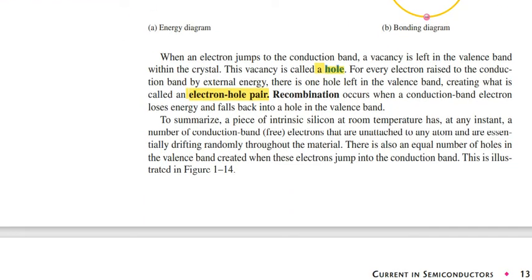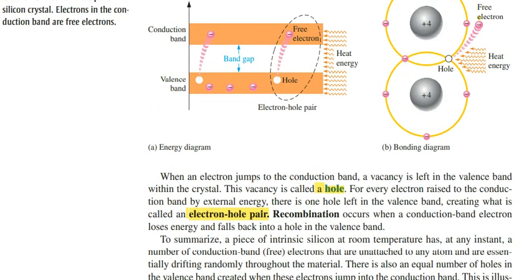Next, regarding the hole: when the electron jumps from the valence band to the conduction band, a hole is created in the valence band. However many electrons jump from the valence band to the conduction band, the same number of holes are created, and these holes act as positive charges.